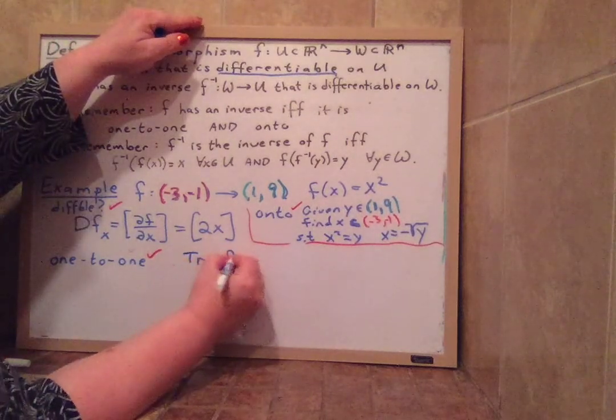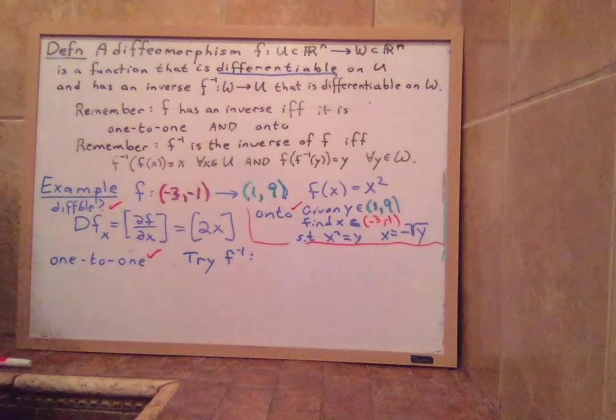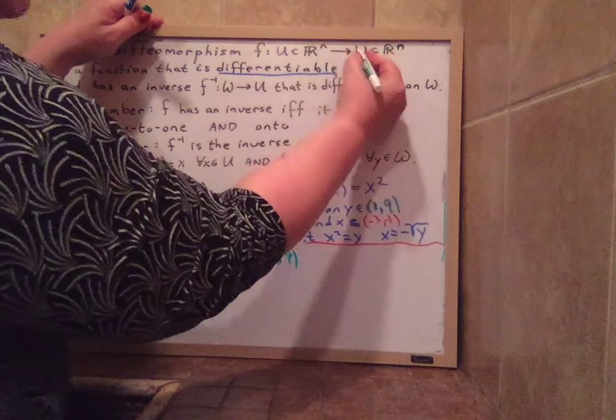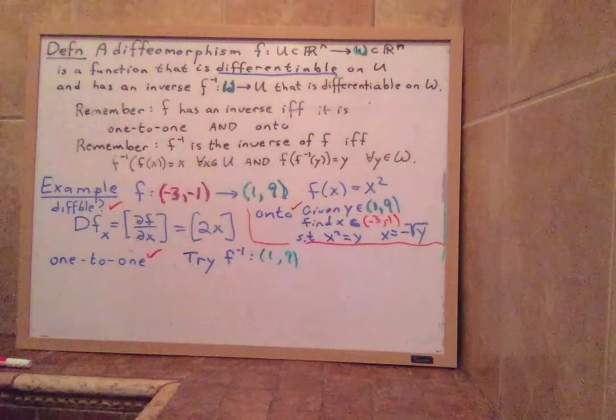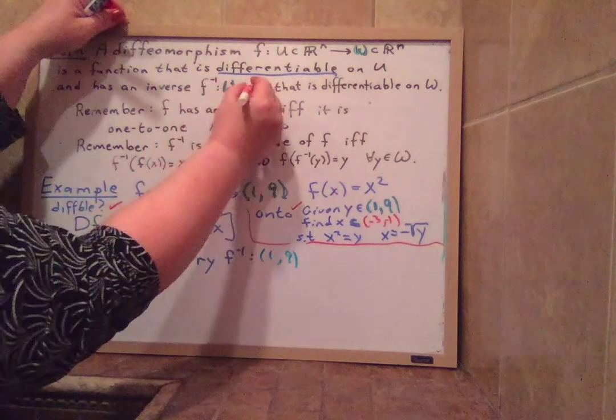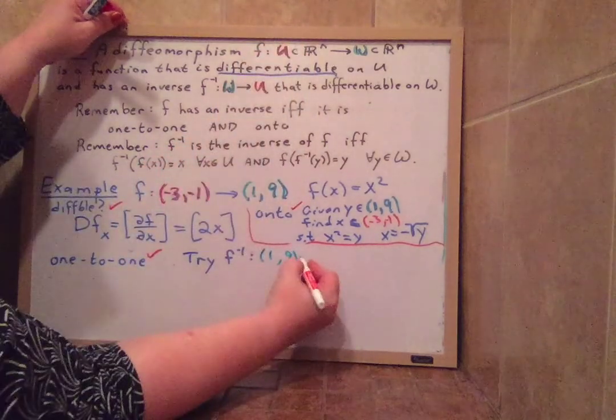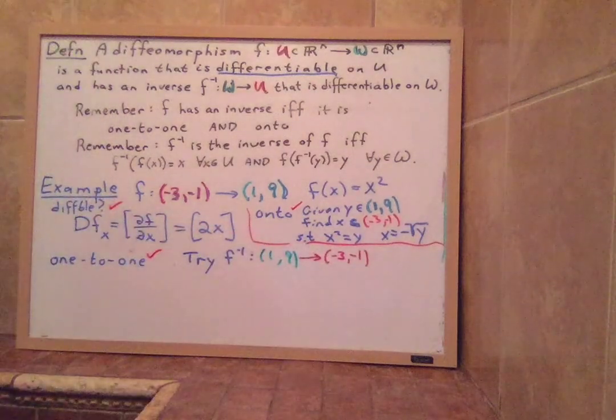Try F inverse, which is going to go from the negative one nine, sorry, the positive one to nine. It's going from our W set. F inverse starts at W and it goes back into the U set. F inverse goes from W to U. So this is going to go to our U is negative three, negative one.